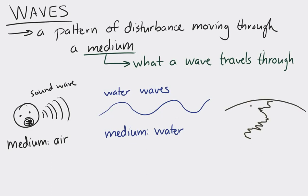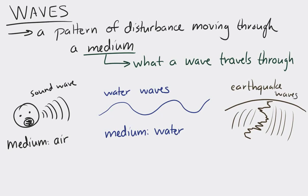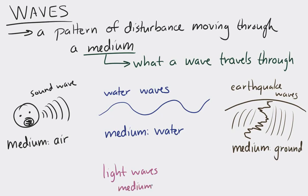For an earthquake, an earthquake wave moves through the ground, so the ground is the medium. For a light wave, let's not worry about that — it's actually pretty complicated. But a light wave is a little bit different, so just keep that in mind.